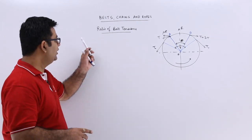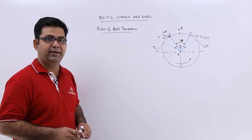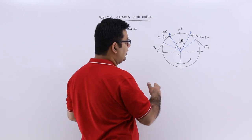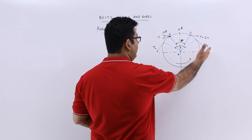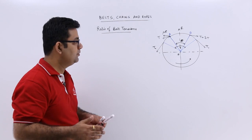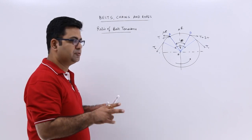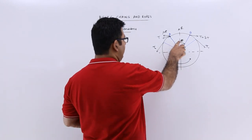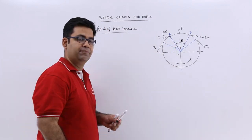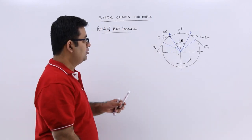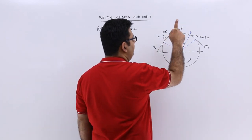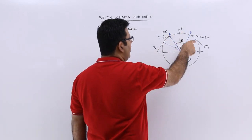Now let's talk about the ratio of belt tension. Let us say this is a pulley and the tension on the tight side is T1 and the tension on the slack side is T2. Let us suppose a small angle dθ, because θ is the angle of wrap for the belt. So dθ is the small sector that we are assuming between points A and B — a small arc.